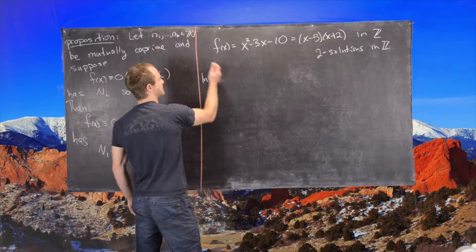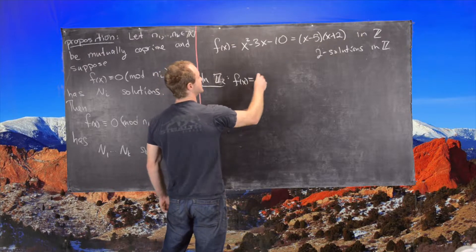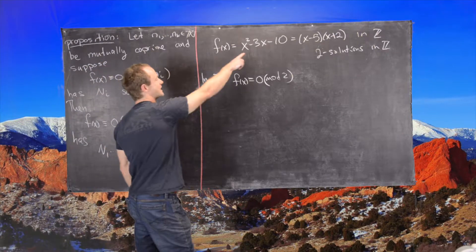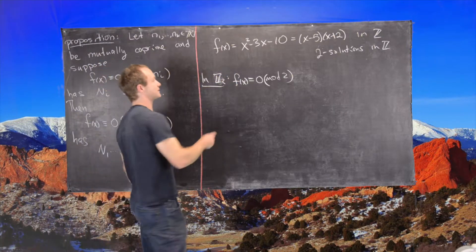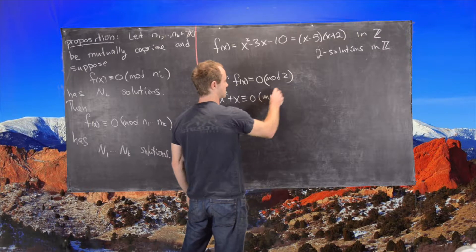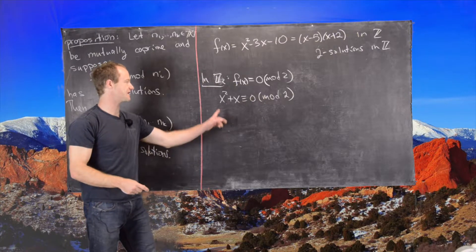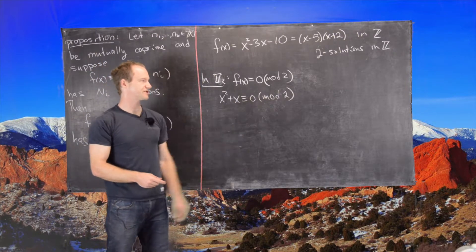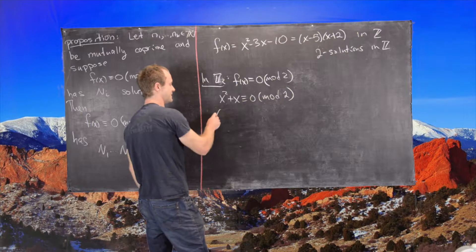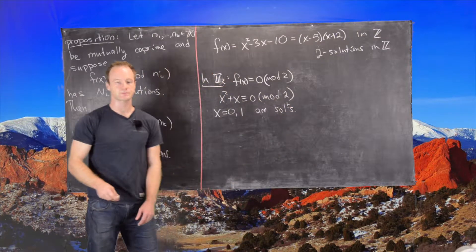In ℤ₂ — that is, solutions to f(x) ≡ 0 mod 2 — we can reduce the polynomial mod 2 and see that this is the same as x² + x ≡ 0 mod 2. Notice that x = 0 and x = 1 are both solutions: 0 + 0 = 0 ≡ 0 mod 2, and 1 + 1 = 2 ≡ 0 mod 2. So x = 0 and x = 1 are solutions.